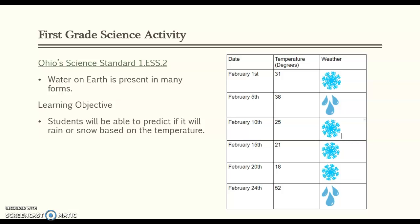Here we have our science activity, and this is building off the idea that water on earth is present in many different forms — solid, liquid, etc. The goal of this activity is for students to predict whether it will rain or snow based on the temperature. If water freezes at 32 degrees, it makes sense that below that it would be snow and above that it would be rain. Students would create a chart based on the weather patterns over the past week or month, and then make predictions based on that chart. They can then share this chart with their classroom or the rest of the school community.